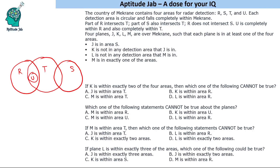The first question asks: if K is within exactly two of the four areas, which of the following cannot be true? K in exactly two areas — we cannot put K inside U, because placing K there would put it in three areas: R, U, and T. So U is ruled out, leaving R, S, and T.